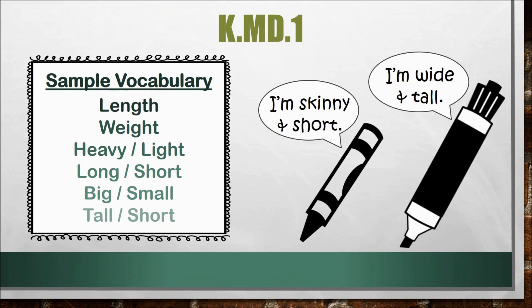Students must also have a clear grasp on MD3 because this standard sets the stage for collecting and graphing data in later grades. The first standard we will examine is KMD1. This standard has students describe measurable attributes of objects such as length or weight, and describe several measurable attributes of a single object. Knowledge of key vocabulary is a key indicator of success.